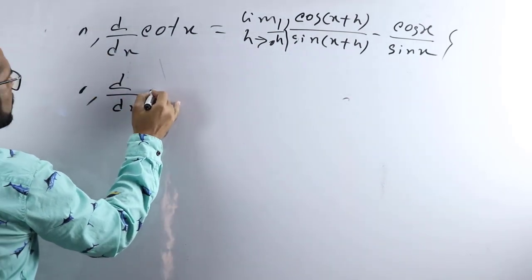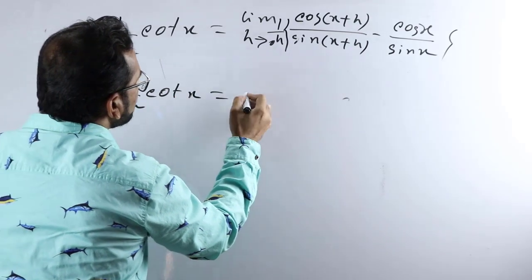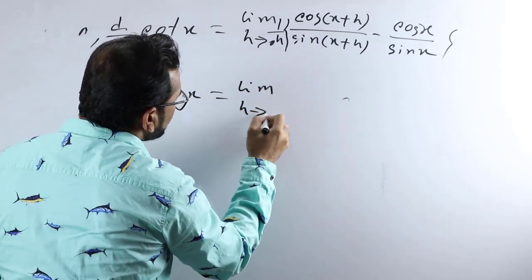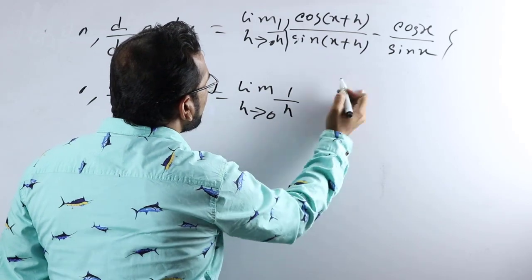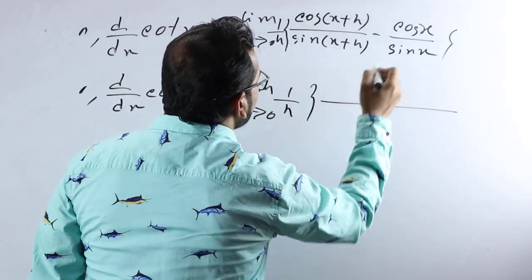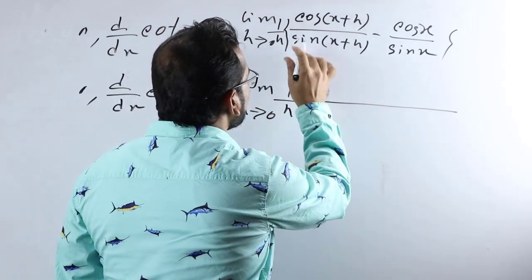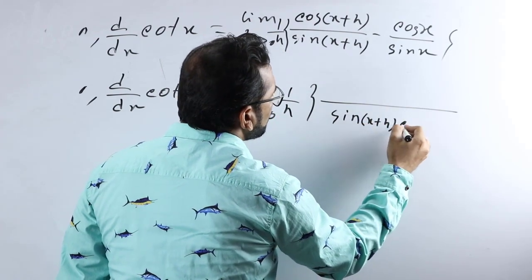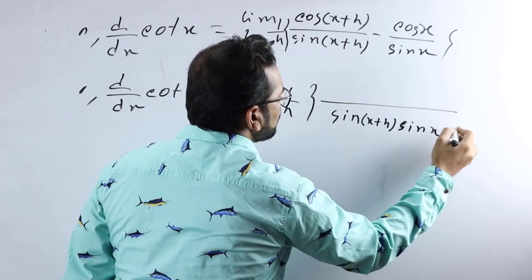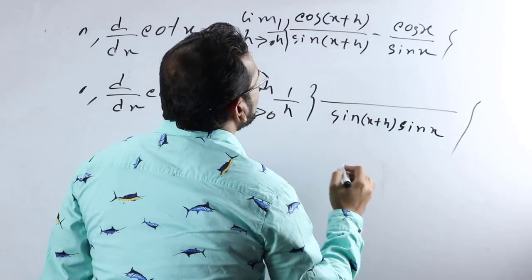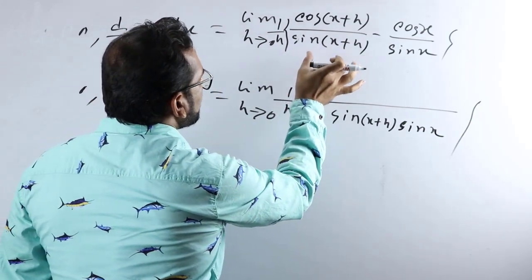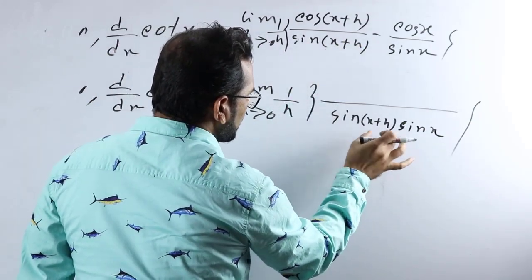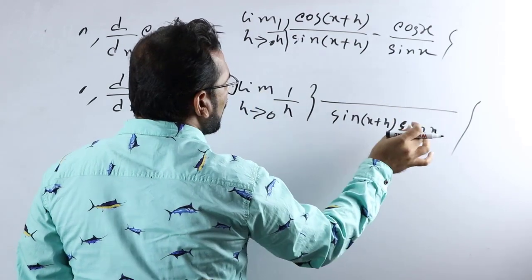d/dx of cot x equals limit h tends to 0, one divided by h. Taking the LCM, which will be sin(x+h) times sin x.